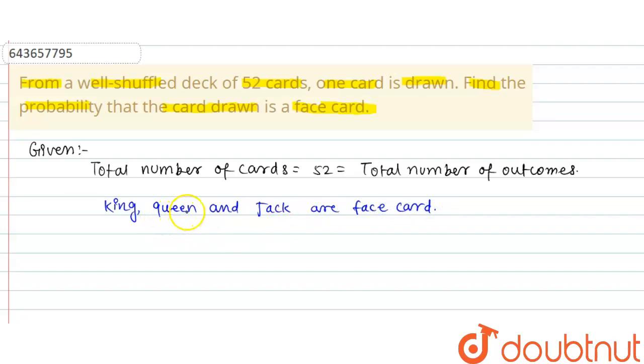And there are four suits of cards, so total number of face cards is equal to 12. So you can write here, total number of face cards is equal to 4 into 3, that is equal to 12.